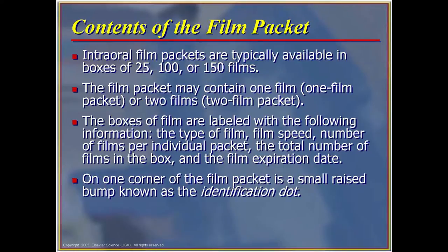The boxes of film are labeled with the following information: the type of film, the film speed, number of films per individual packet, and the total number in the box. The film expiration date is probably the most important piece of information. On one corner of the film is a small raised bump known as the identification dot. Film should never be used beyond that expiration date because we won't know until we process the film if the emulsion has gone bad. We could take the picture over again if it's not acceptable, but the patient would be exposed to radiation a second time, totally unnecessarily. The date of expiration is not like a sell-by date — this is a drop-dead expiration date.